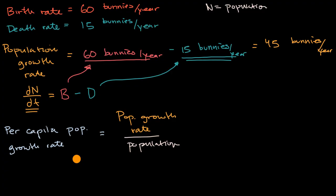So what is going to be our per capita population growth rate? Pause this video and try to figure that out. Well, if we have a population of 450 bunnies, 450 bunnies, our population growth rate per the number of bunnies is going to be equal to.